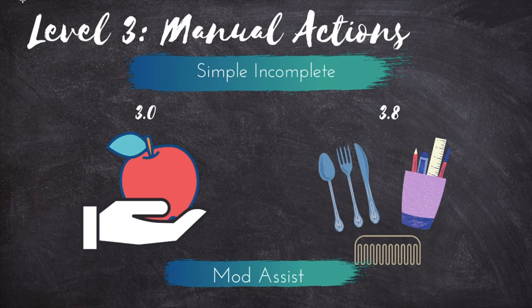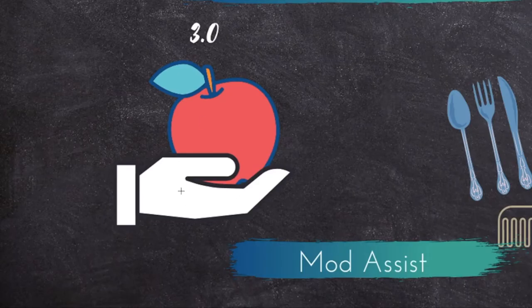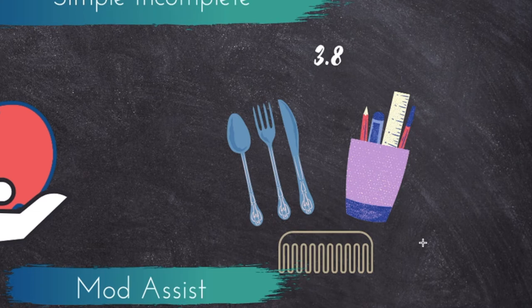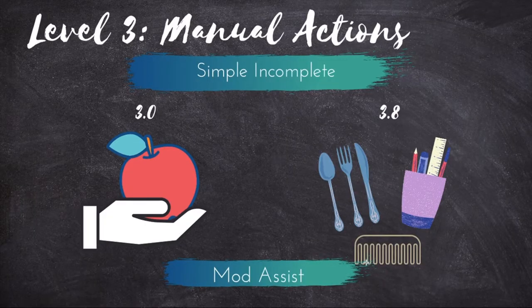The third level is the manual actions level. Think simple one or two step incomplete tasks, including basic familiar fine motor movements. At level 3, a person can grasp things with their hands, and as they progress they will be able to manipulate objects and use them more appropriately. At 3.0 they may be able to grab a toothbrush; at 3.2 they may be able to distinguish it from a comb. By 3.8 a person should be able to use most common everyday items in very simple ways and distinguish between them. At this point they may require moderate assistance for ADLs.